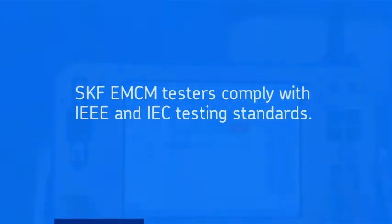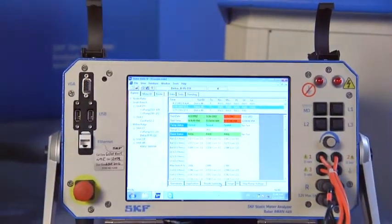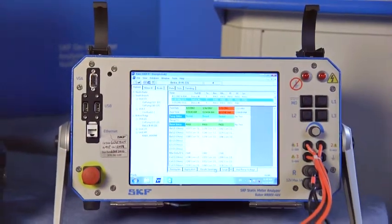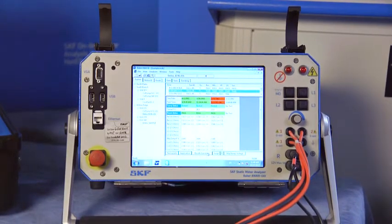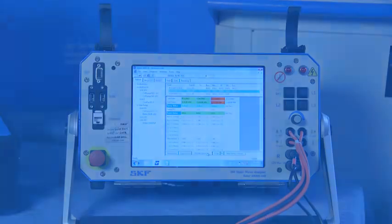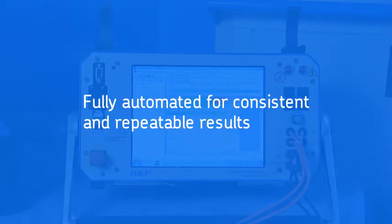SKF offers two families of static motor analyzers. The AWA is a fully automated Windows-based analyzer with complete insulation testing capabilities. Since it is automated, you can be assured that the testing is consistent and the results are repeatable regardless of who is doing the testing.